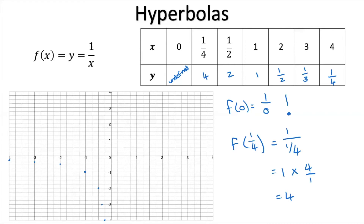Let's plot those points. Remember, when x equals 0 there is no point on the graph, so we can't plot that. Starting with x = 1/4, y = 4, then x = 1/2, x = 1, 2, 3, and 4. Now all we do is connect the dots with a nice smooth line.